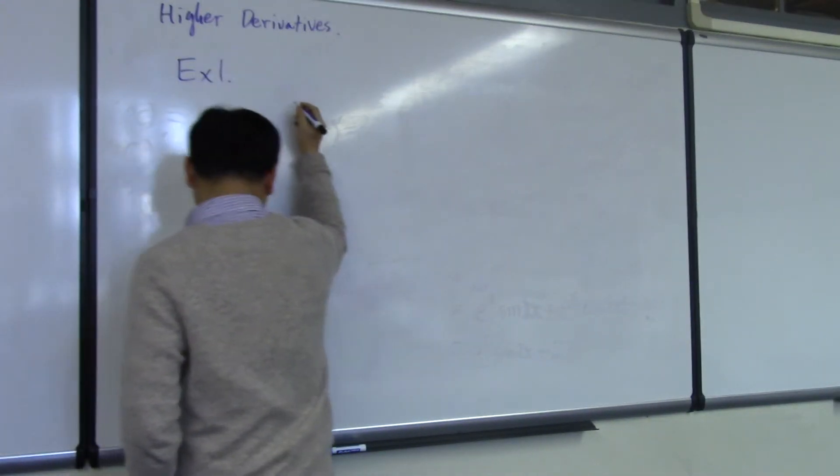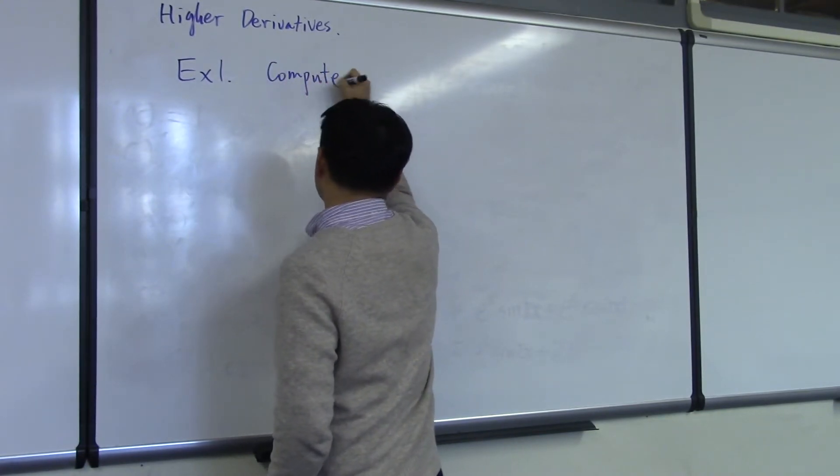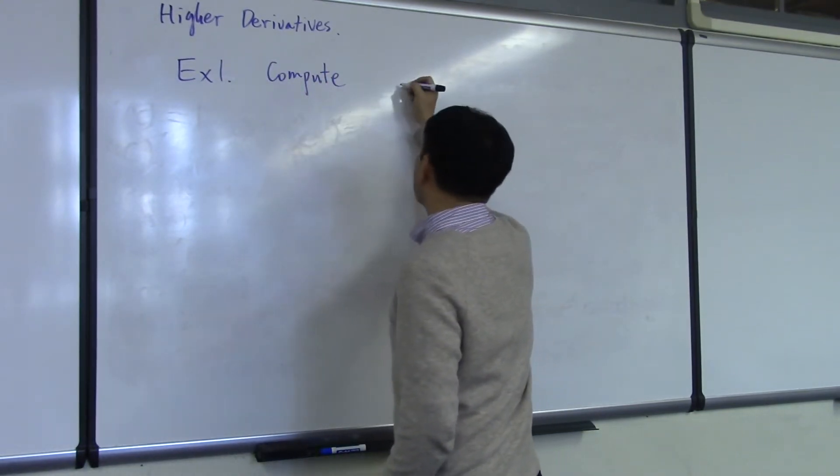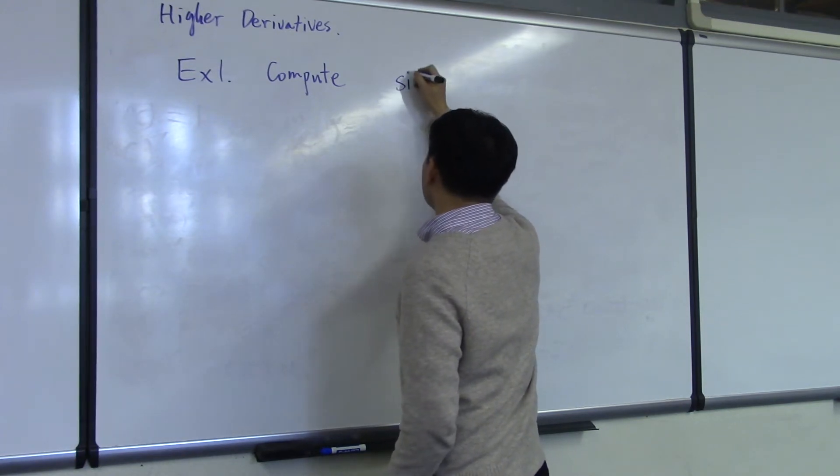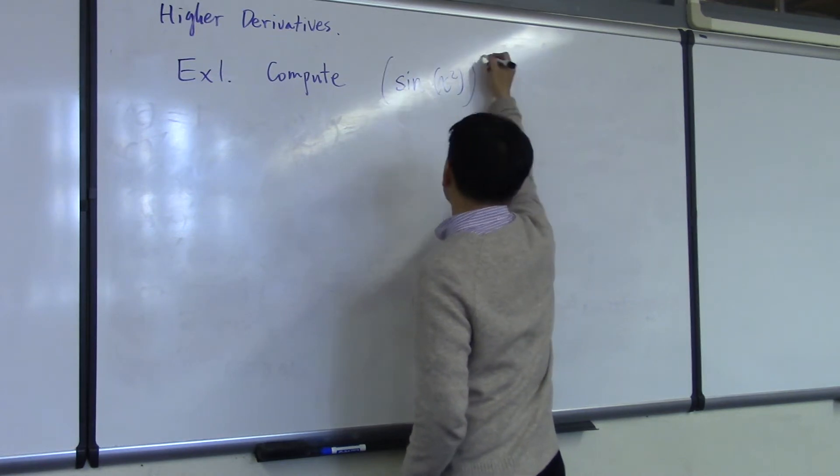Example 1. Compute sine of x squared double prime.